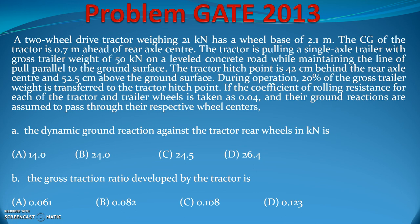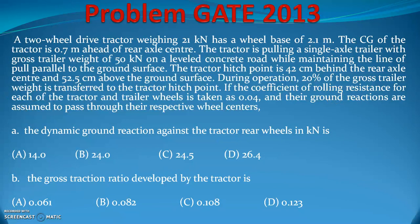The problem states: a two-wheel drive tractor weighing 21 kilonewtons has a wheelbase of 2.1 meters. The CG of the tractor is 0.7 meters ahead of the rear axle center. The tractor is pulling a single-axle trailer with a gross trailer weight of 50 kilonewtons on a level concrete surface, maintaining the line of pull parallel to the ground.